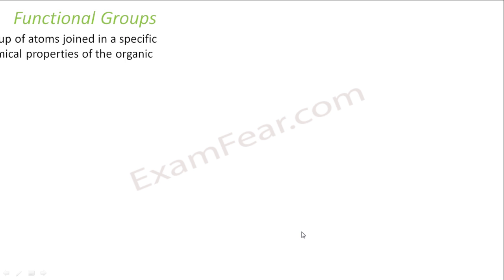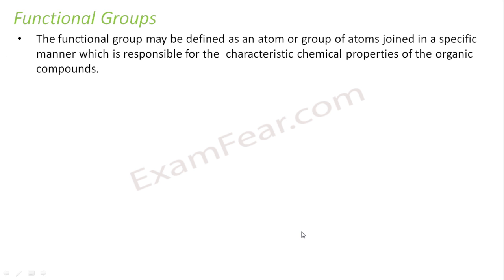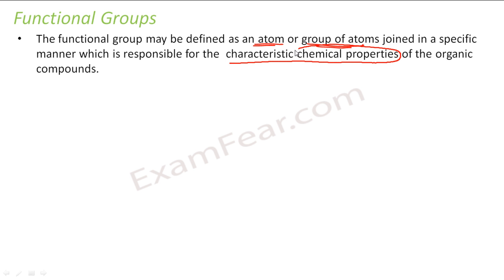So what is a functional group? A functional group, as the definition suggests, is nothing but an atom or group of atoms, when joined in a specific manner, responsible for the chemical property of organic compounds. So the chemical property is determined by the functional group.